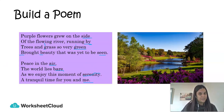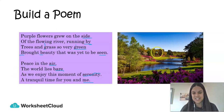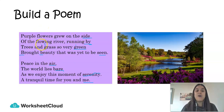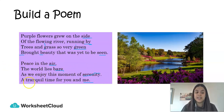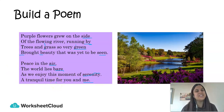I'm going to read my poem one more time, and I really encourage you to please write your own based on this picture. 'Purple flowers grew on the side of the flowing river running by. Trees and grass are so very green, brought beauty that was yet to be seen. Peace in the air, the world lies bare. As we enjoy this moment of serenity, a tranquil time for you and me.' I hope you enjoyed that poem, Grade 4s, and I'm sure your ones will be wonderful as well.